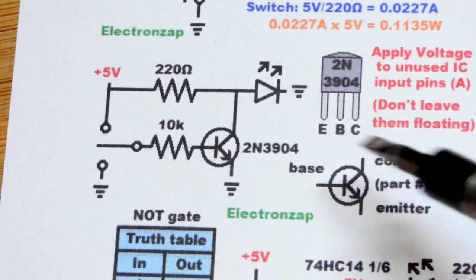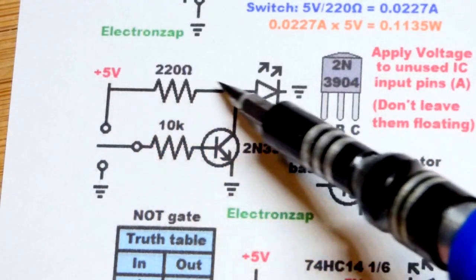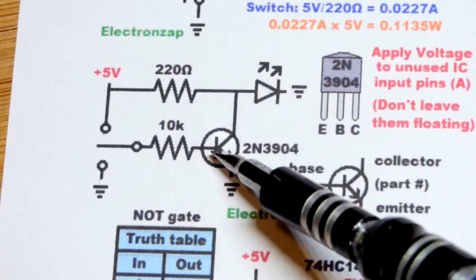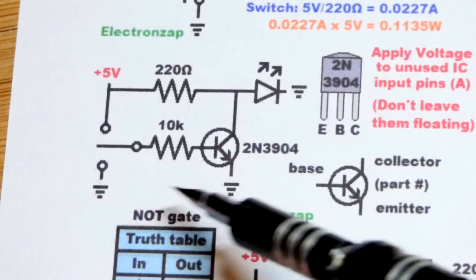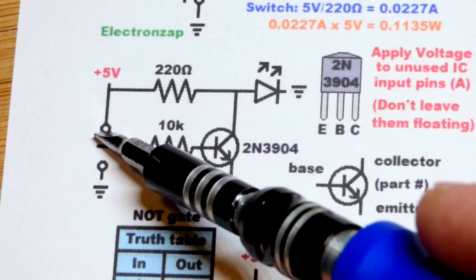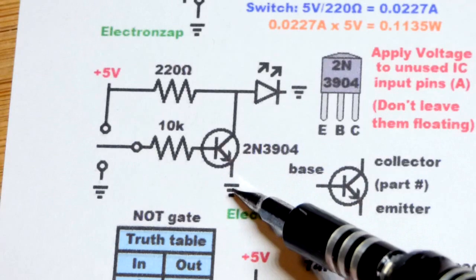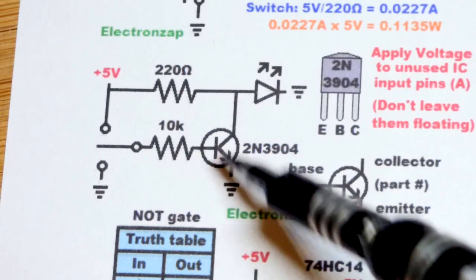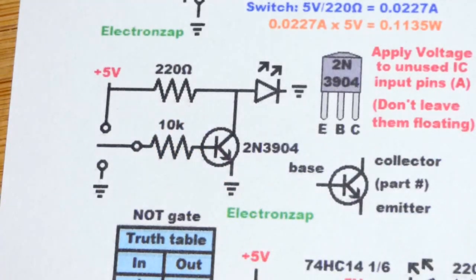The NPN bipolar junction transistor worked basically the same way. We had 5 volts across the resistor and the LED so that it is on because the transistor is naturally off. We could go directly to ground or leave it floating, although leaving it floating, you may get a stray signal. If we go to the positive supply, we'll get a little bit of current through that 10,000 ohm resistor, base to emitter. That will allow it to conduct pretty much freely from collector to emitter, and it will take away the current, just like the mechanical switch did.